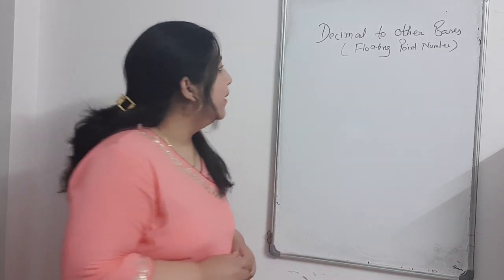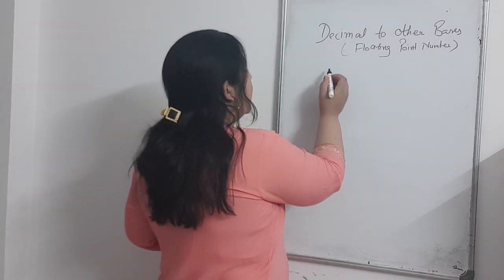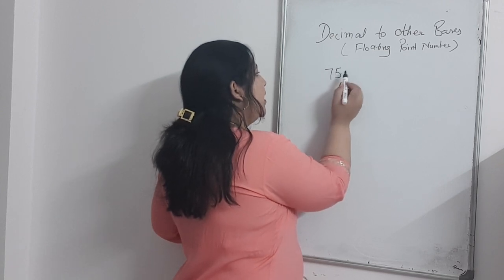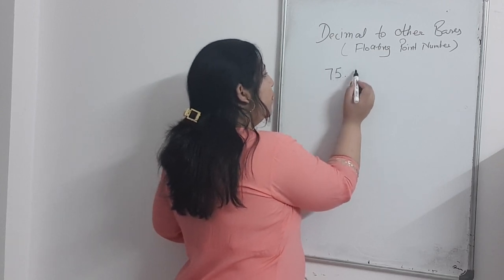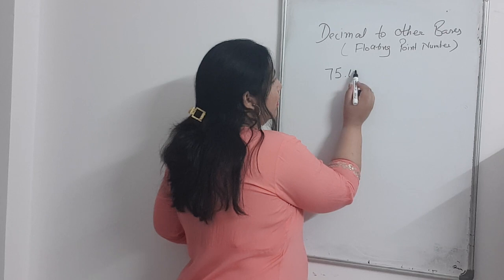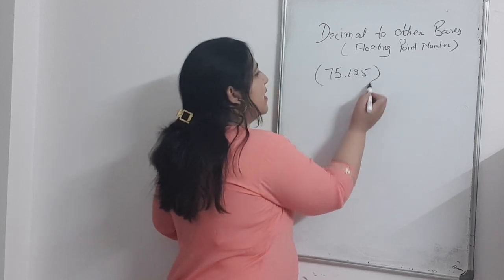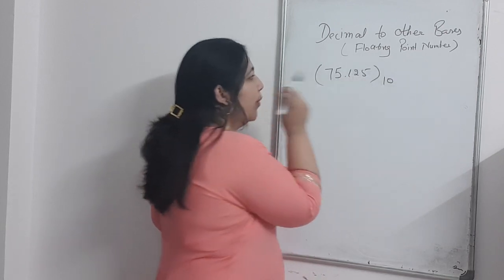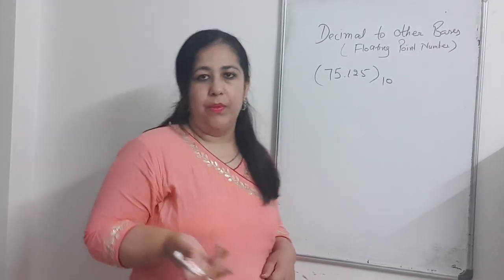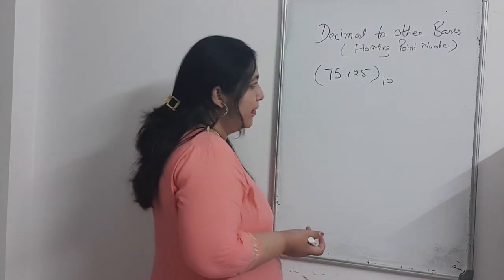Coming back to the topic, we have to convert decimal to other bases. The decimal number we have is 75.125, and I am asked to convert it into binary. So how do you convert it into binary?